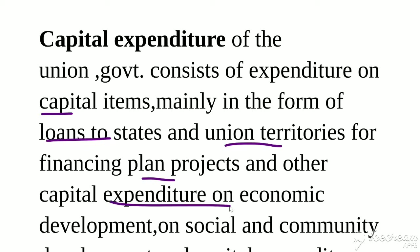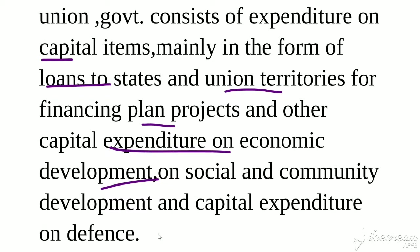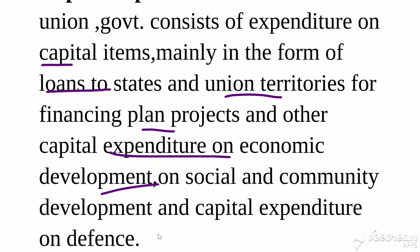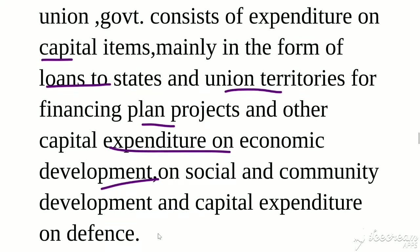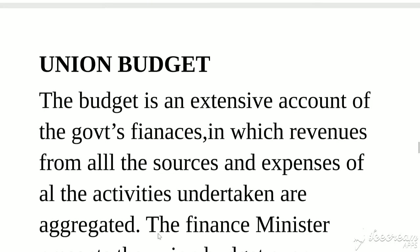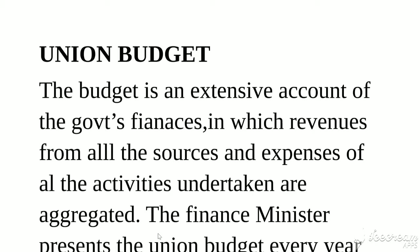Capital expenditure of the union government consists of expenditure on capital items, mainly in the form of loans to states and union territories for financing plan projects, and other capital expenditure on economic development, social and community development, and defense. Questions are often asked where you are given an item and have to identify whether it is capital expenditure or revenue expenditure. Revenue expenditure examples include police, judiciary, defense, agriculture, health, and labor. Capital expenditure examples include economic development and social community development.